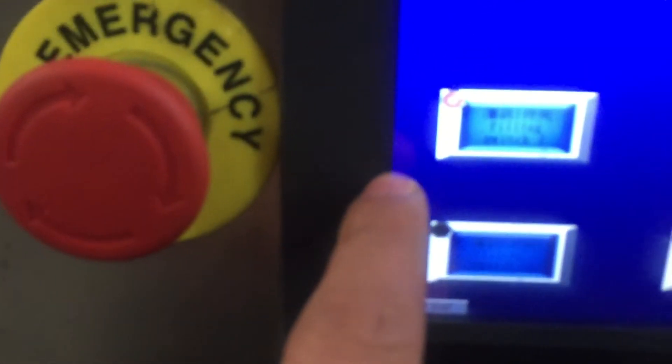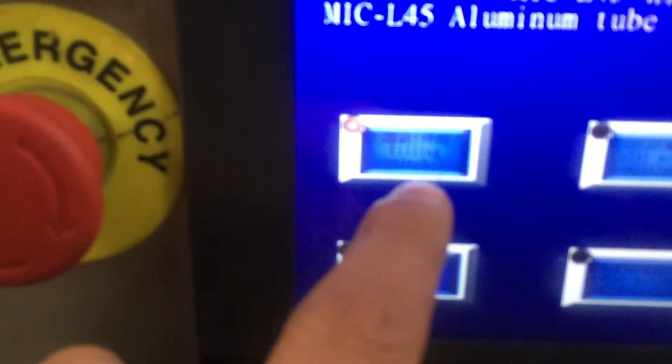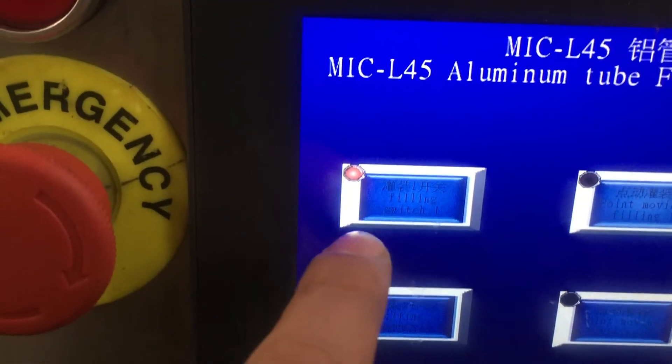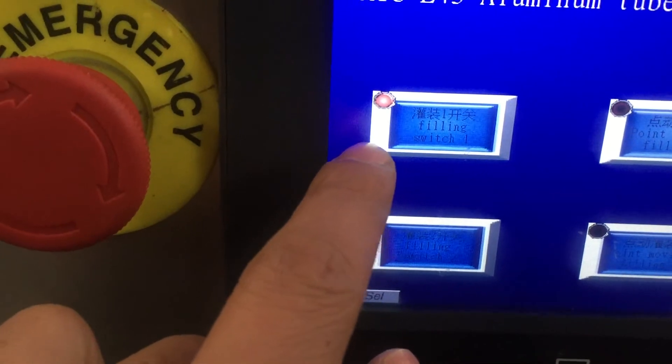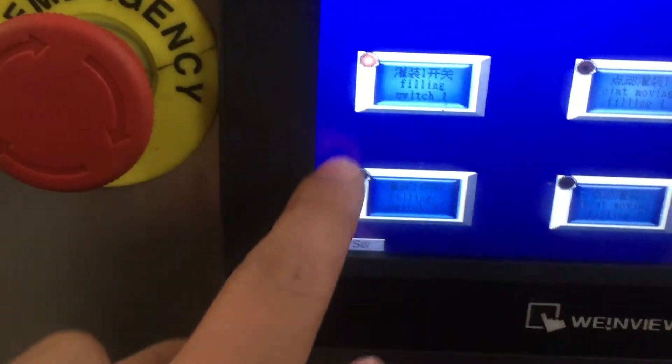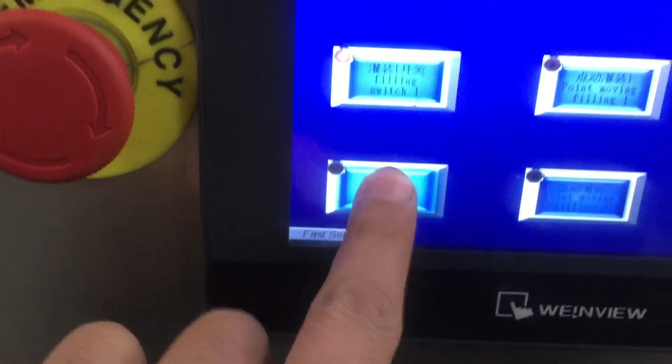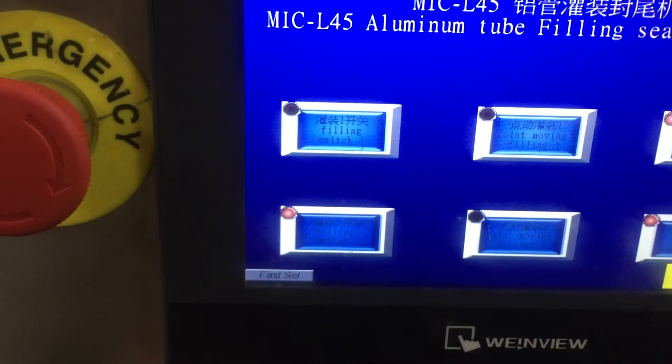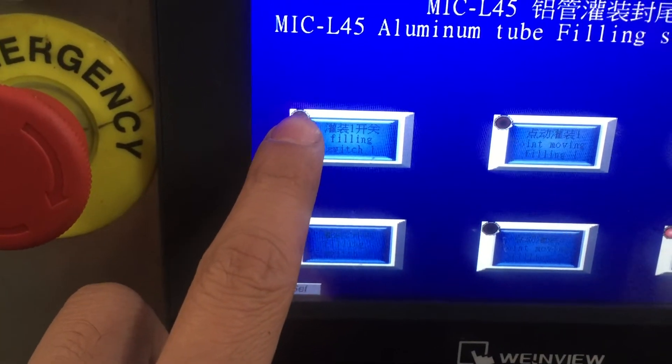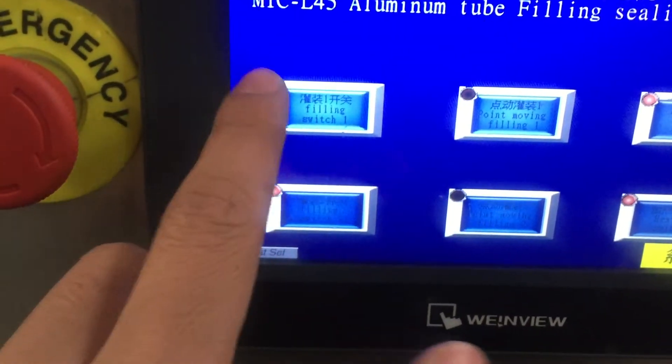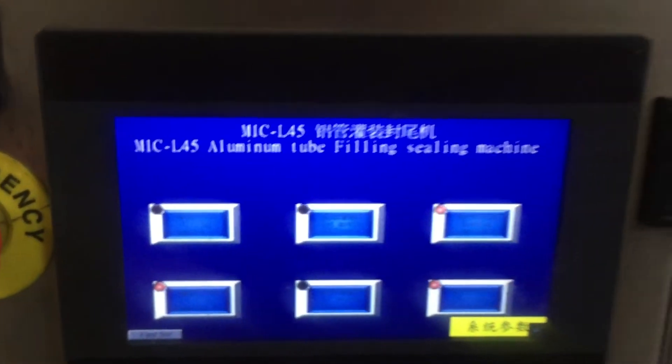So when I use the machine, I use the first filling nozzle. This is glue A. Okay, so if you want to change to glue B, you do like that. So you see here, it's switched already. That's it.